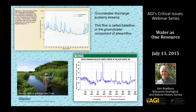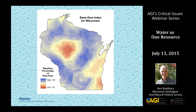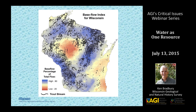Groundwater sustains streams like trout streams by maintaining base flow. The groundwater discharge is the reason streams flow cool and steadily even during hot parts of the year. Here in Wisconsin we have great trout streams in the southwest part of the state that flow all the time even in mid-summer, because of groundwater discharge. A stream hydrograph shows peaks from storms, but the base flow — the black line — is what's sustained by groundwater. Higher base flow index areas correspond directly to where our trout streams are.